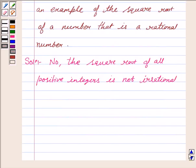For example, the root of 1: it is a positive integer and root of 1 is 1, which is not irrational.